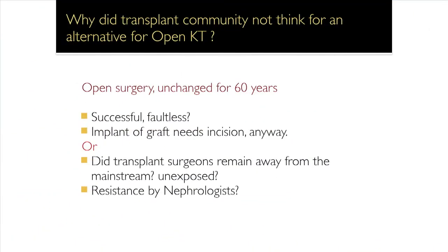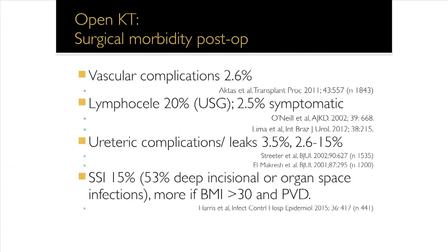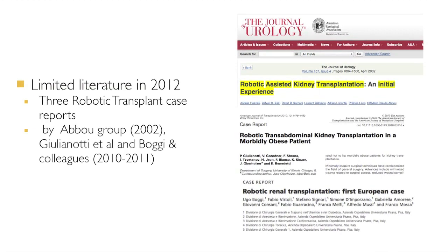Before you try an innovative procedure you have to raise a question. You have to feel the need to develop that procedure. Open surgery has been used for transplantation — why hasn't a non-invasive procedure been tried for renal transplantation? Open surgery for renal transplant is not without complications; it has its own catalogue of complications published extensively, including surgical site infections. Despite that, in 2012 there were only three case reports on attempts at robotic transplantation.